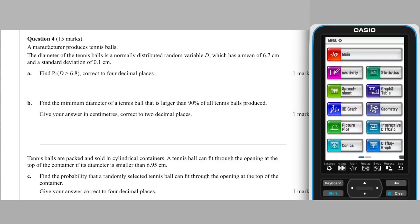Question 4 is about tennis balls, their manufacturing, packaging and quality. In part A, we can use the information about the normally distributed diameter of tennis balls manufactured with mean of 6.7 cm and standard deviation of 0.1 cm to find the probability of a randomly chosen tennis ball having a diameter greater than 6.8 cm.